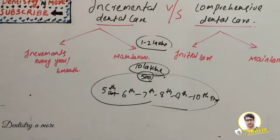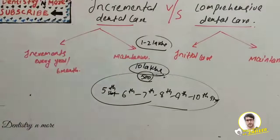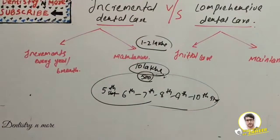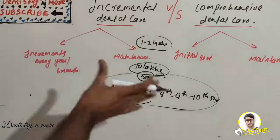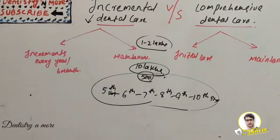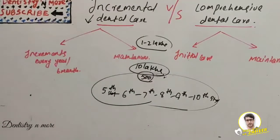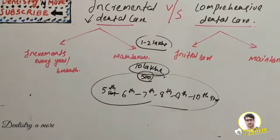We have already approached the school and committed to providing dental treatment, so we cannot go back from that commitment. In that scenario, we have a funder who can provide us one or two lakh rupees every year. So we can finish the problem in five or six years by providing dental treatment part by part to the students. In that case, we can opt for the incremental dental care concept — providing dental care in increments.